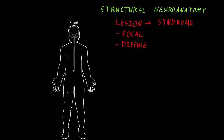Syndromes involving weakness from diffuse dysfunction of skeletal muscles are usually covered with neurological syndromes, even though skeletal muscle really isn't part of the nervous system. But since weakness is a very common syndrome to occur with lesions of the nervous system, these syndromes from diffuse dysfunction of skeletal muscle are usually covered with neurological syndromes.